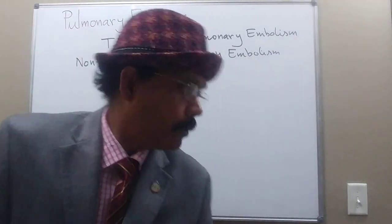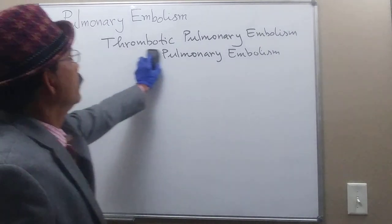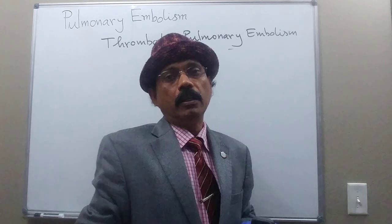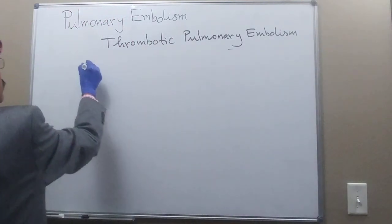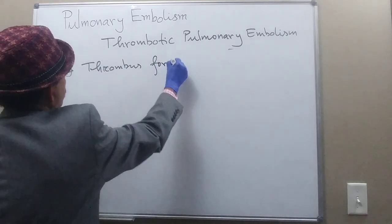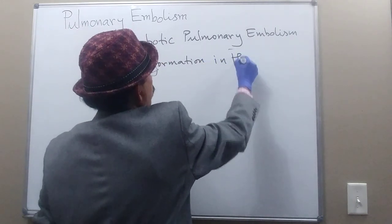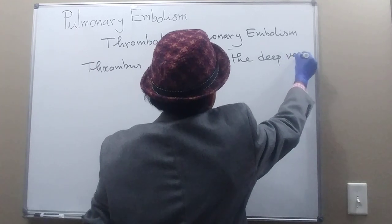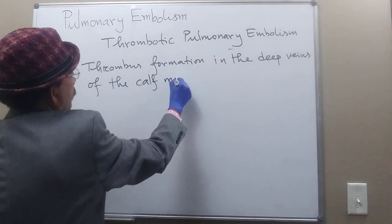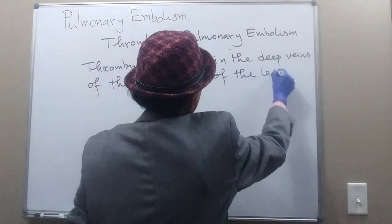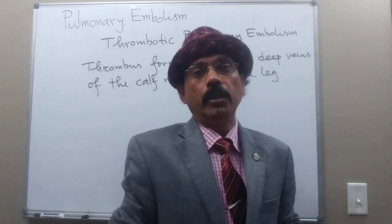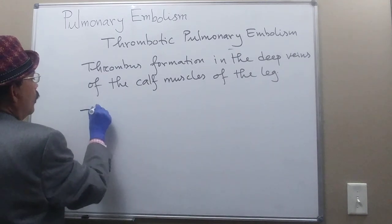In thrombotic pulmonary embolism, there will be thrombosis formation in the deep leg veins, especially the veins inside the calf muscles. That thrombus will go to the lung and cause pulmonary embolism. From this vein, it goes to the popliteal vein.